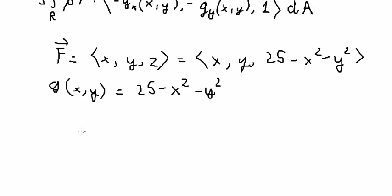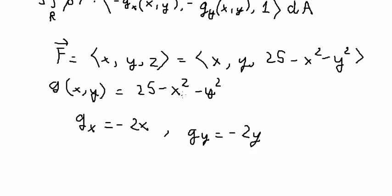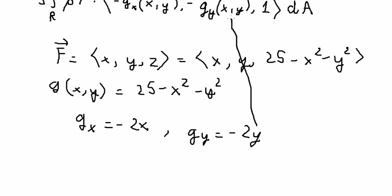We take the first partial derivative with respect to x, which gives negative 2x. The first partial derivative with respect to y gives negative 2y. So we put these results into our expression.